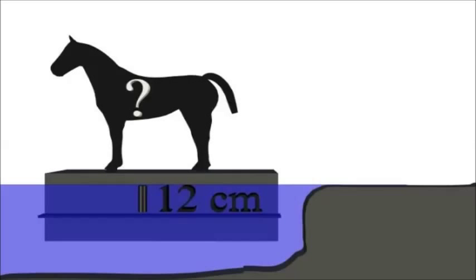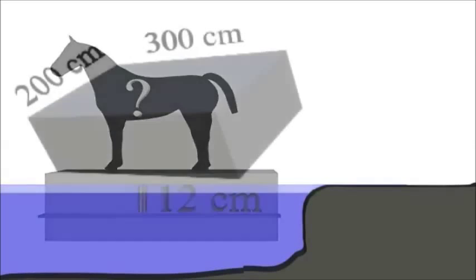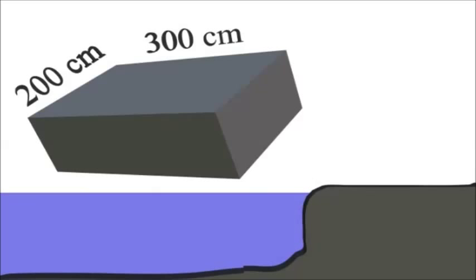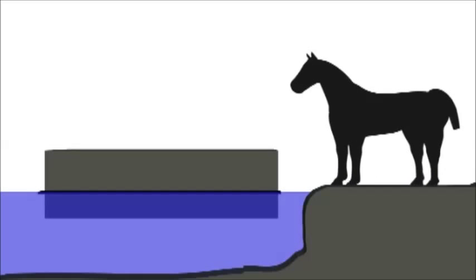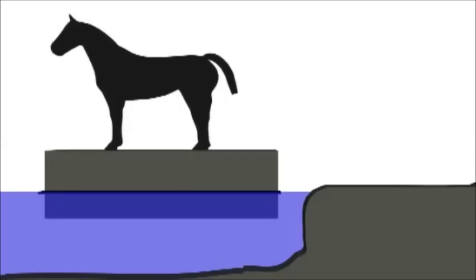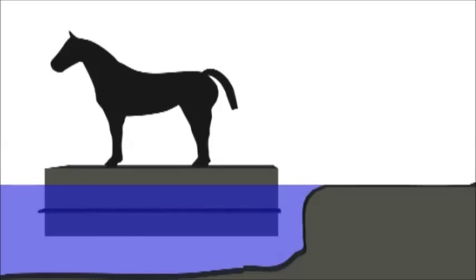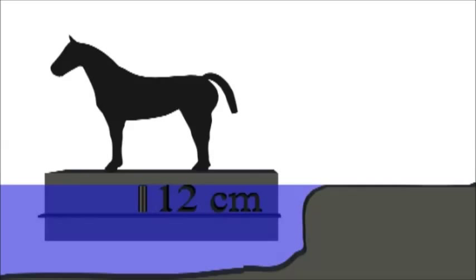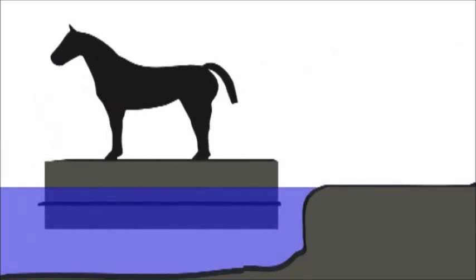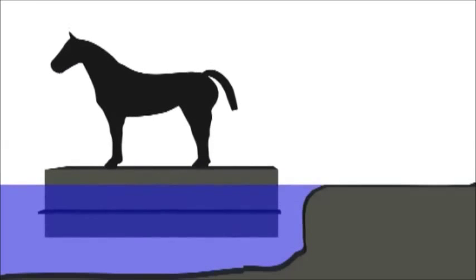Now to solve the horse problem, we have a rectangular barge measuring 300 centimeters by 200 centimeters sitting in a freshwater lake. A horse jumps onto the barge, causing the barge to sink 12 centimeters. How much does the horse weigh? If you think you know how to do this, pause the video and do the math.